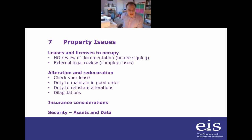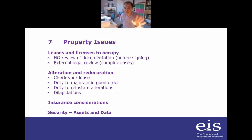Things to look out for in leases: alteration and redecoration — you've got to watch that if you do something to your office, what's your requirement to reinstate it at the end of the lease and how expensive will that be? For example, if you put up yellow wallpaper and the landlord doesn't like it, he's usually quite entitled to ask you to reinstate it before you go. It's important to keep an eye on that and not get any unexpected liabilities at the end of the lease. You will also generally have a duty to maintain the office in good order.